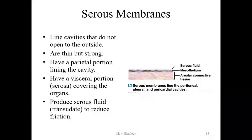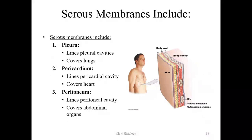Serous membranes line body cavities that are not open to the outside world — the ventral body cavity and coelom. They are thin but strong, with a parietal layer near the body wall and a visceral layer on the organ. They produce serous fluid called transudate to reduce friction. Examples include the pleura (lungs), pericardium (heart), and peritoneum (abdominal organs).